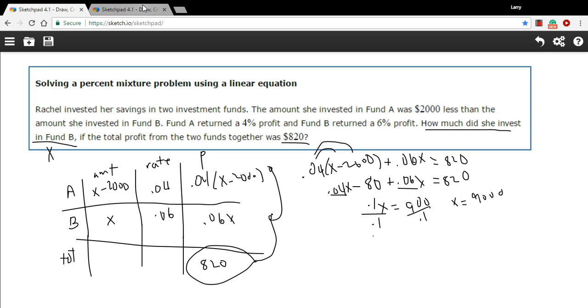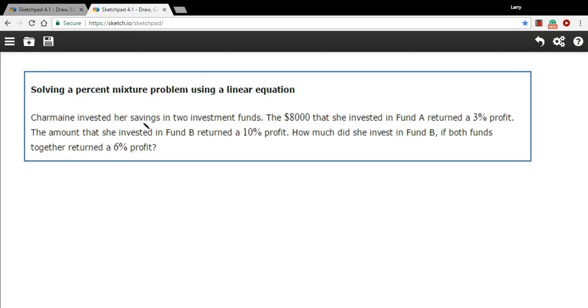Let's try one more. This one may seem even more complicated, but again setting up a chart is really going to help. Let's read through it once. It says Charmaine invested her savings in two investment funds. The $8,000 that she invested in Fund A returned a 3% profit. The amount she invested in Fund B returned a 10% profit. How much did she invest in Fund B? So that's our question. We'll call that X. If both funds together returned a 6% profit.